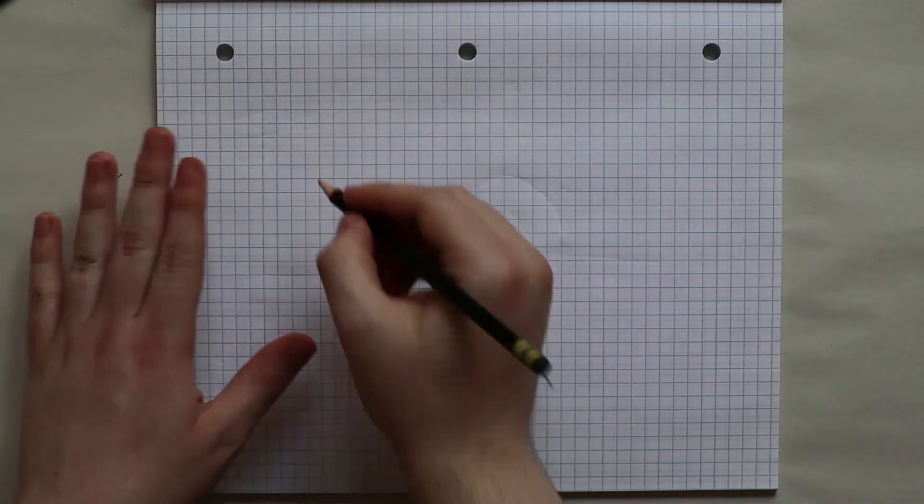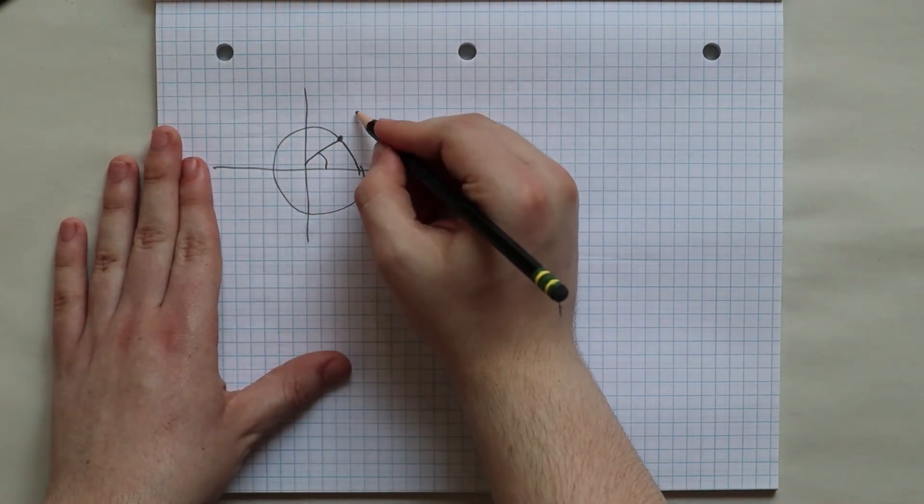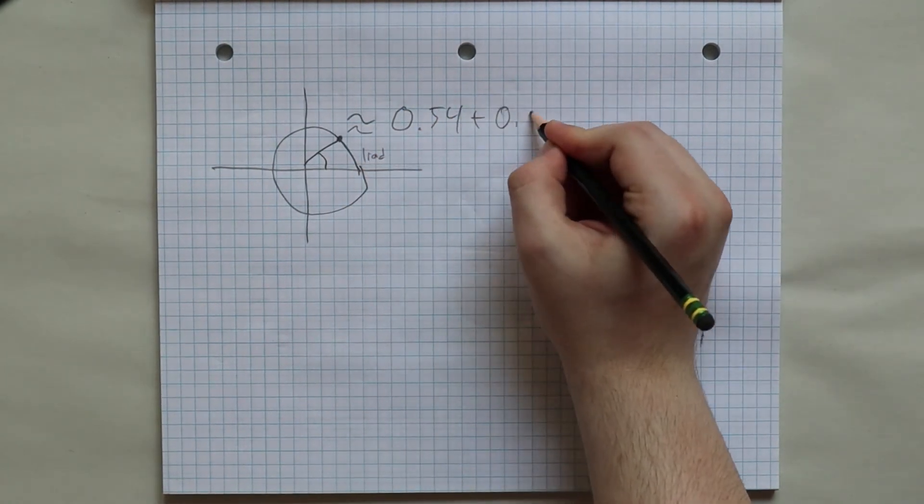Fascinating, right? So e to the ith power is equal to the complex number that is 1 radian around the unit circle, which is approximately equal to 0.54 plus 0.841 times i.